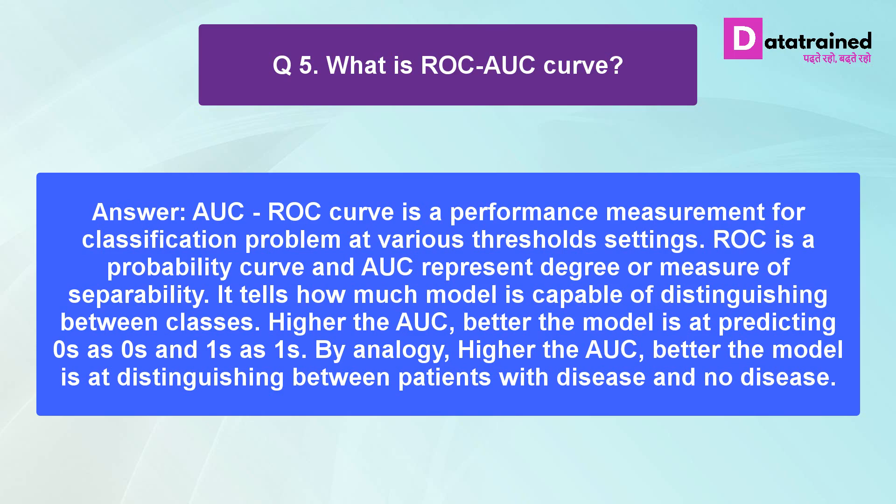Higher the AUC, better the model is at predicting zeros as zeros and ones as ones. By analogy, higher the AUC, better the model is at distinguishing between patients with diseases and no diseases.